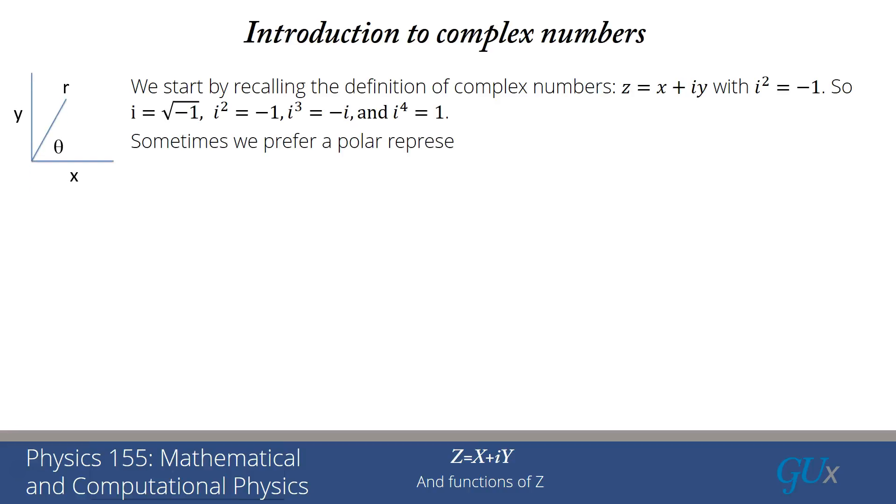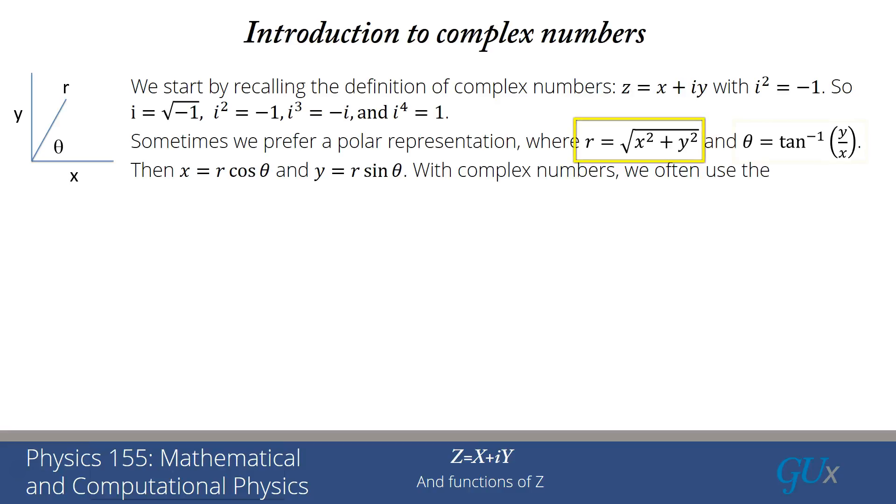Sometimes we prefer to use a polar representation, illustrated on the left-hand side in the figure. R is the square root of X squared plus Y squared, and theta is the arctangent of Y over X. If we're using polar coordinates and expressing the complex number in terms of R and theta, the real part X would be R cosine theta, and the imaginary part Y would be R sine theta.